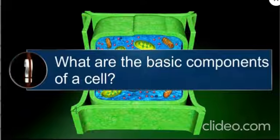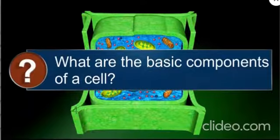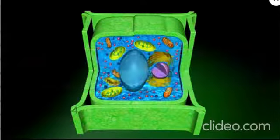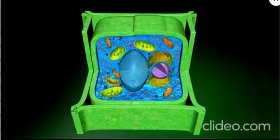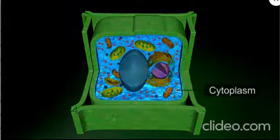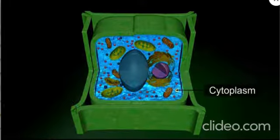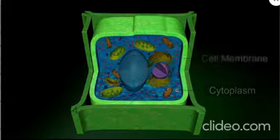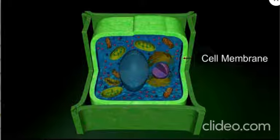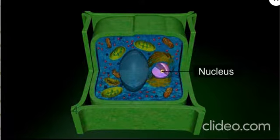What are the basic components of a cell? The basic components of a cell are cytoplasm, cell membrane, and nucleus.